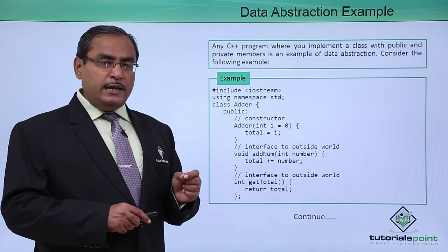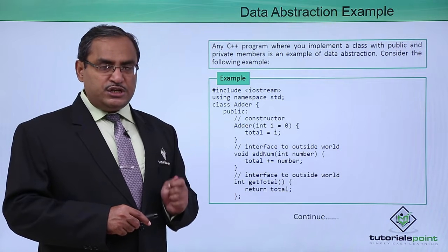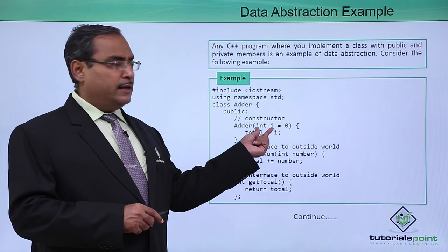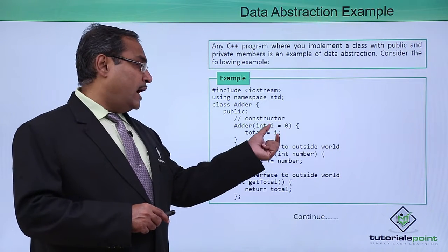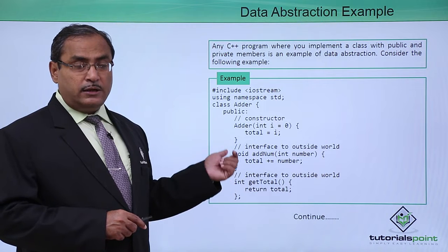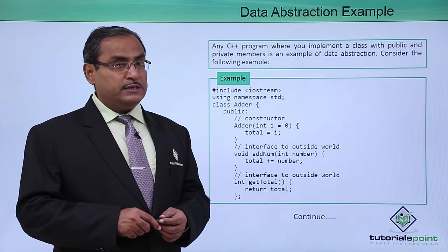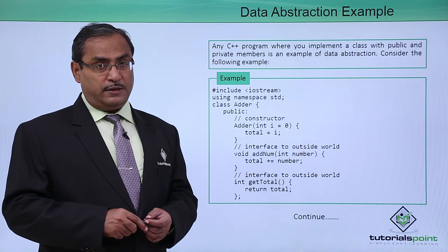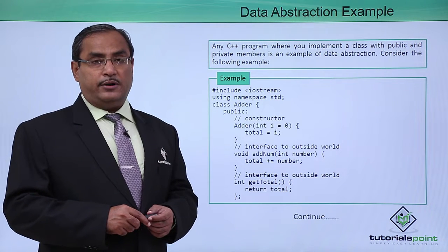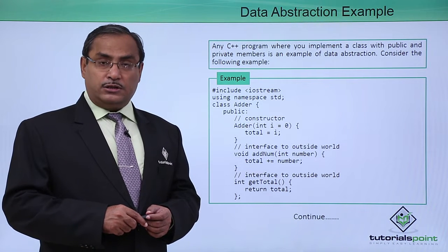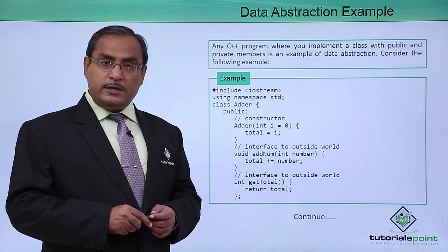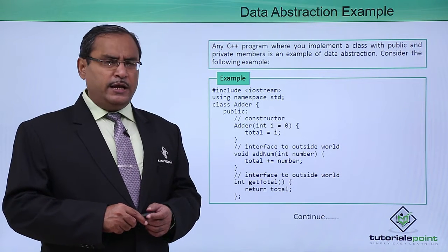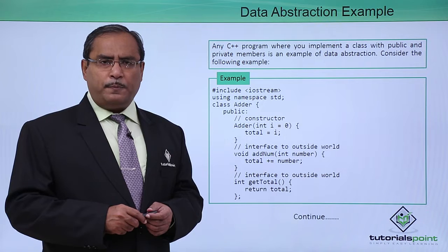A constructor is mainly used to initialize member variables. Here, we have passed one value for i as the default value, and this i is being assigned to total, which is one of the member variables of this class. A constructor cannot have any return type specification — you should say it has no return type specification, not that it cannot return anything. Also, a constructor cannot be inherited.